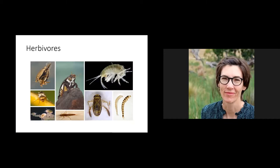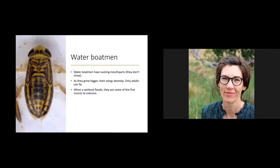Next in the food web are the herbivores — the ones eating living vegetation. In the wetlands around here we always see a lot of water boatmen swimming about. They're pretty cute and pretty abundant — you never find just one, always hundreds together. They have sucking mouthparts, like little straws, that they inject into vegetation and suck the juices out of plants — the way you or I might drink a milkshake.